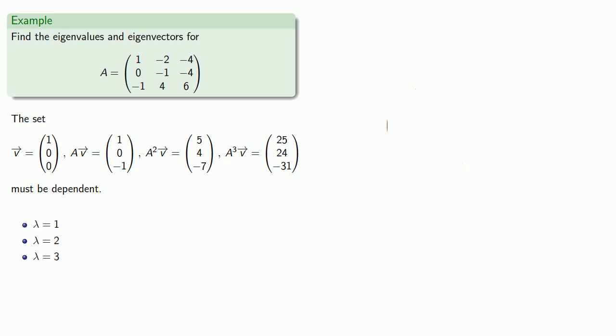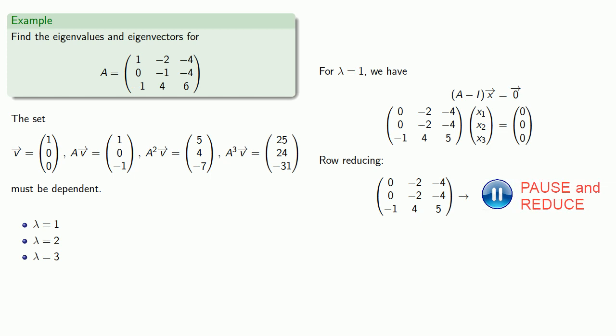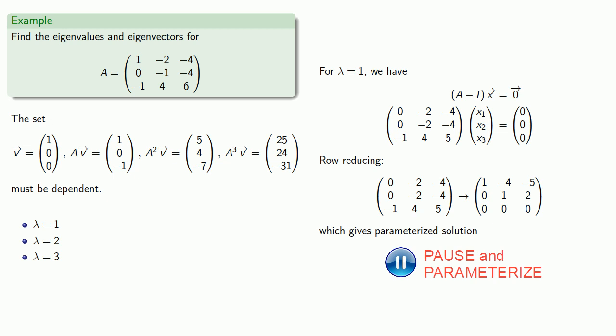And once we have the eigenvalues, we can find the eigenvectors as before. So for lambda equal 1, we have row-reducing, parameterizing our solutions, and if we let t equals 1, this will give us an eigenvector minus 3, minus 2, 1.